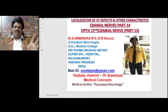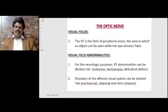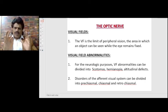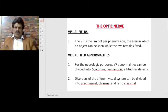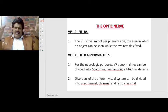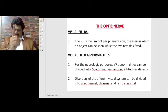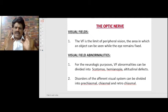So if you have visual field defects, how do you localize them? First, what exactly is a visual field? The visual field is the limit of peripheral vision — the area in which an object can be seen while the eye remains fixed. So this is the visual field. Now, what are all the visual field abnormalities?